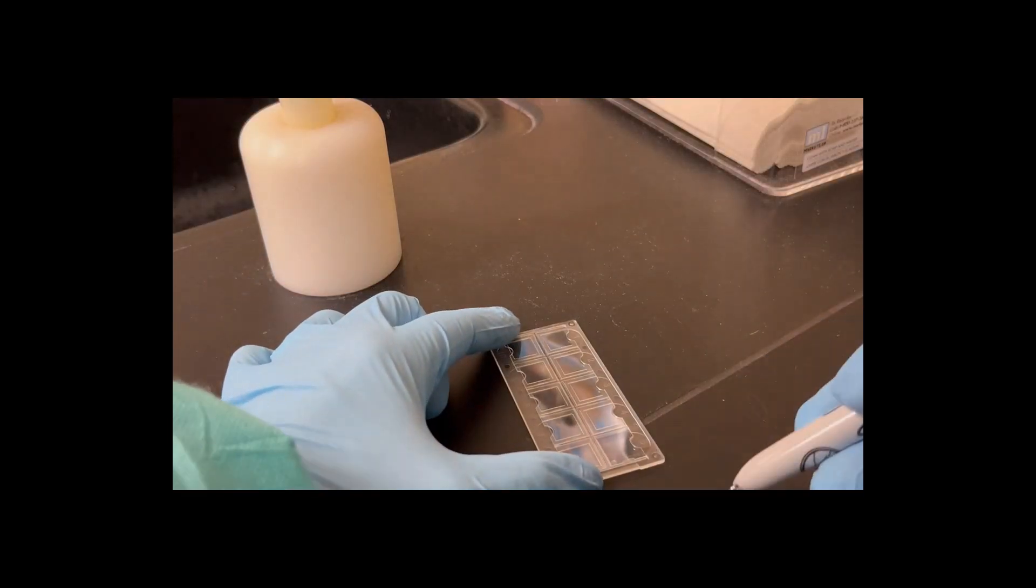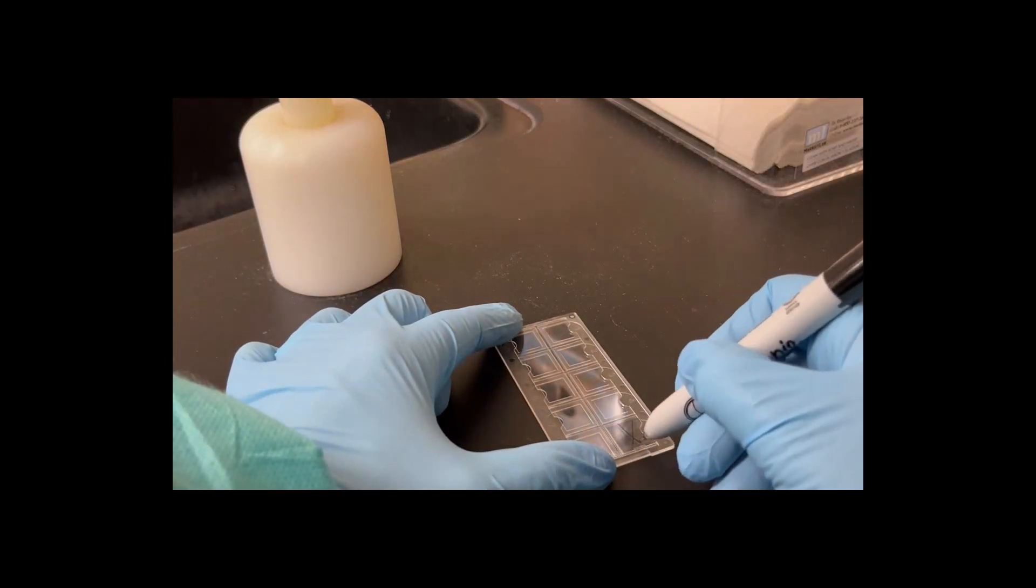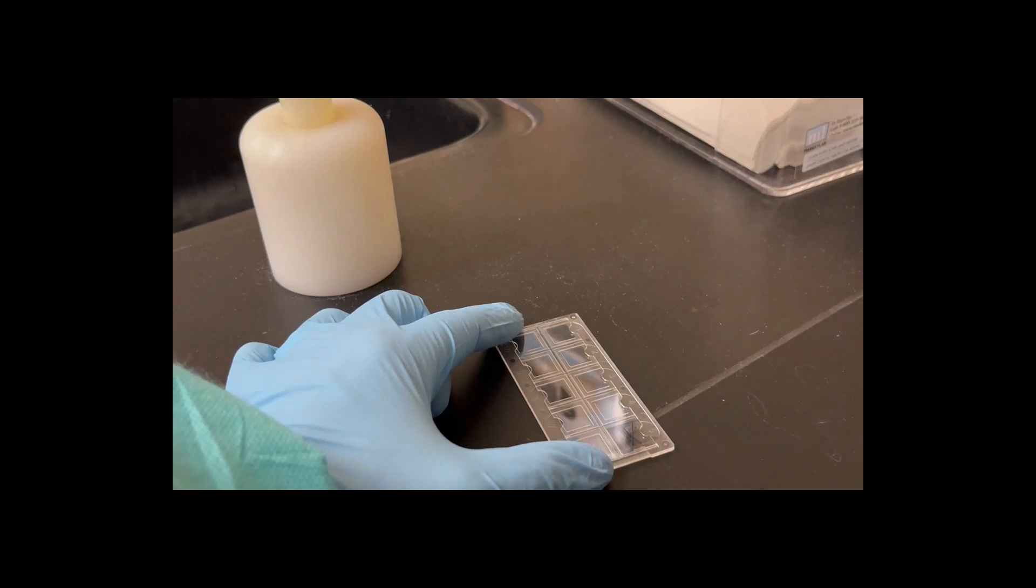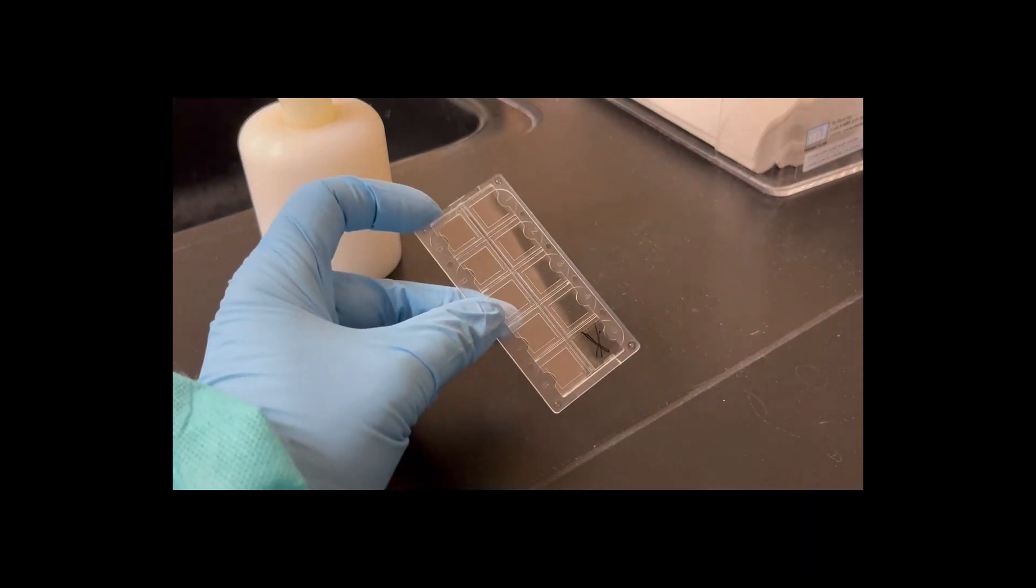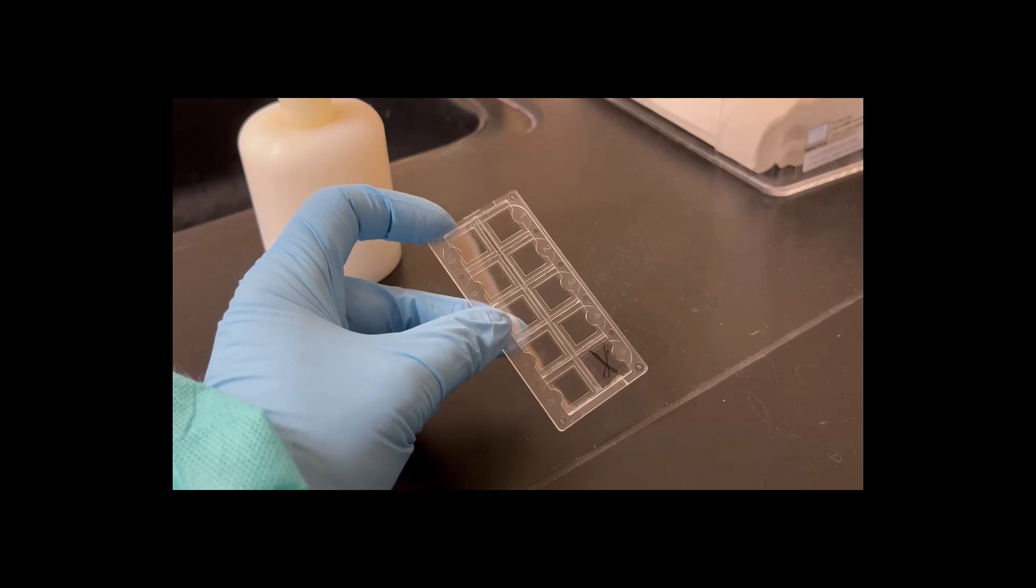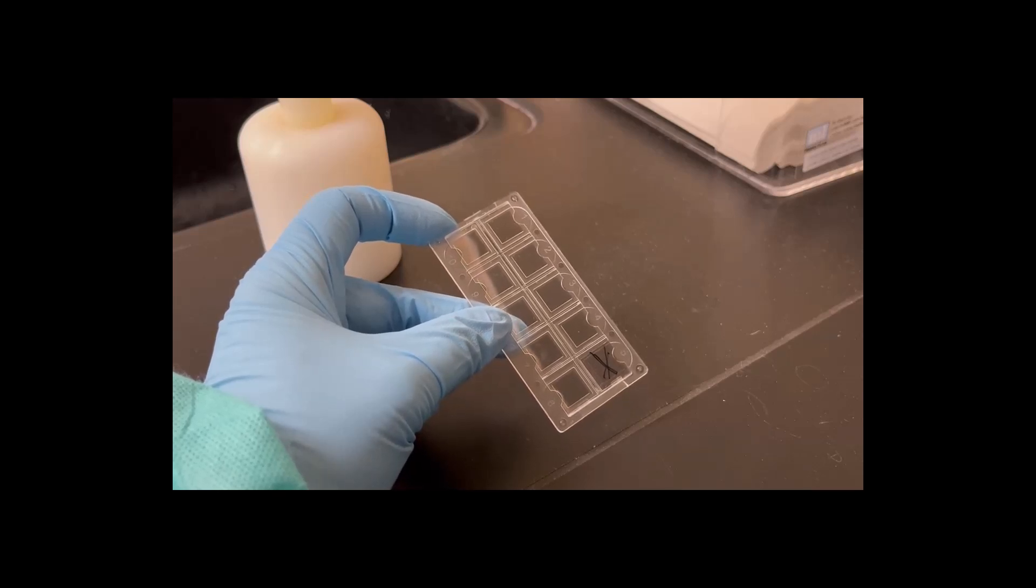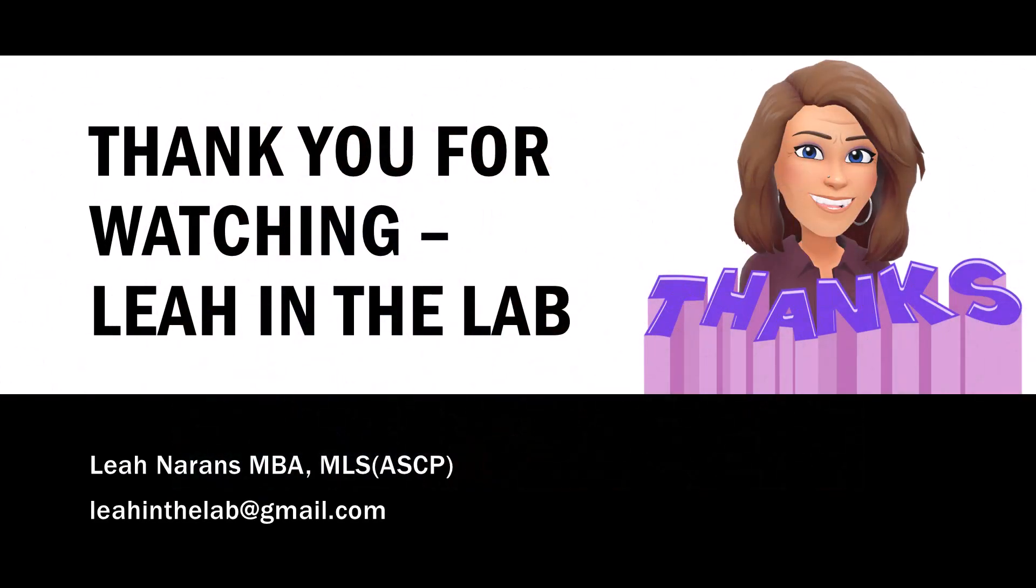When you're done, after I take this over and look at it, put a big X on the well. That makes you remember that you actually have read that one at some point and you don't go back to it because once that urine dries in the well and you go back to it, it gets all crystal-y and really weird-looking and very difficult to read.